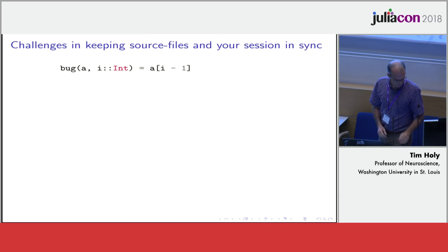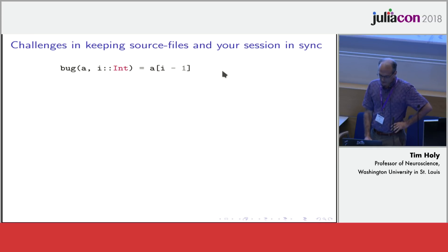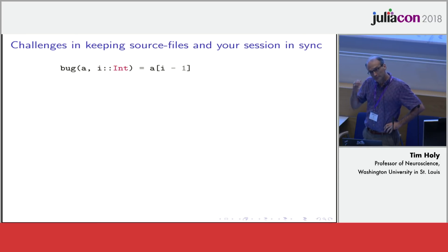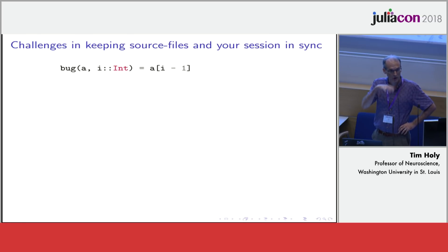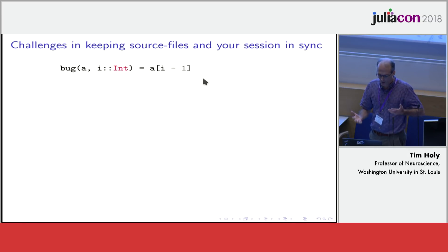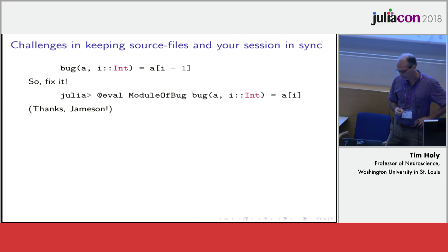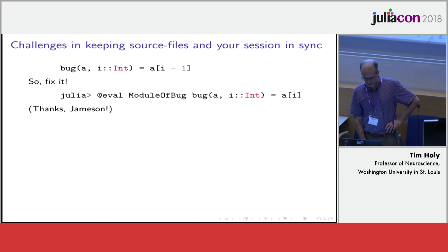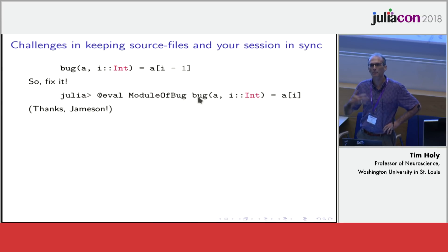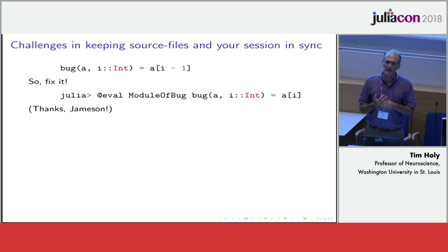To give you an example: imagine a bit of code with an off-by-one bug, and I've already loaded the package that contains it and discovered it has a bug. In older versions of Julia, your only recourse was to shut Julia down and restart, because while you could fix the particular function, any function that depended on it was permanently wired in to have the bug. In Julia 0.6, Jameson Nash fixed this beautifully — you can redefine the method in its fixed version in the appropriate module, and all functions that depended on it get recompiled, so you can keep working in your session.